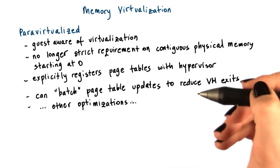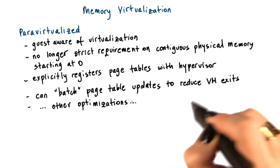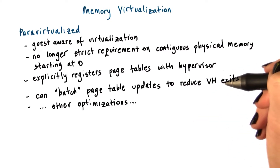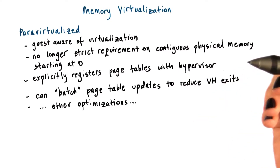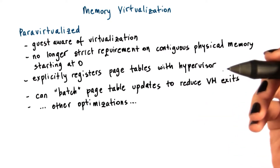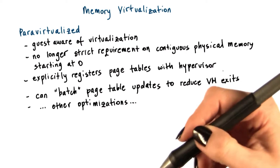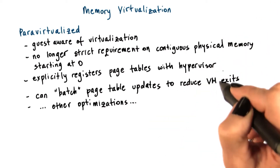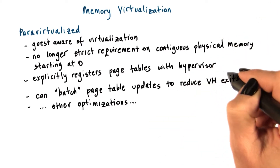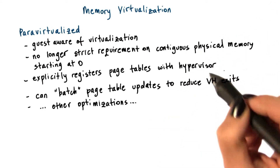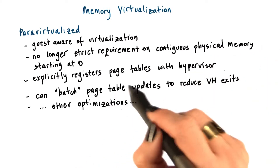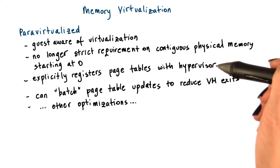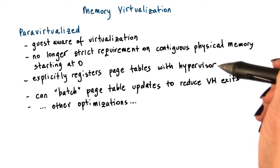The guest still doesn't have write permissions to the page table that's used by the hardware, because otherwise the guest could potentially establish any mapping and corrupt other VMs running on the same system. So every update to the page table would cause a trap and pass control to the hypervisor.